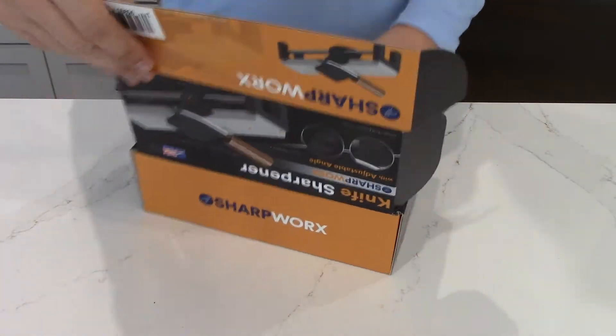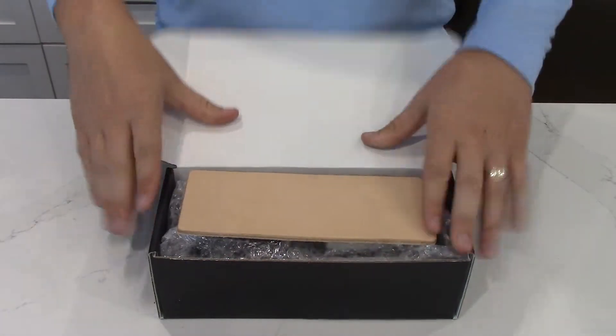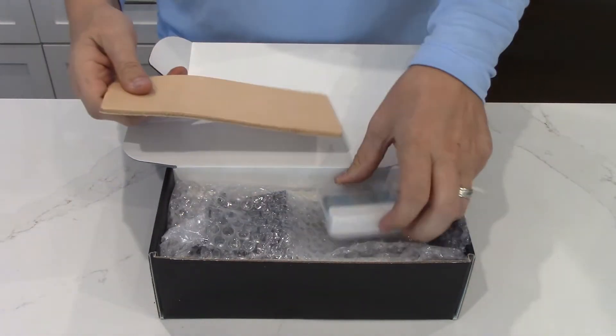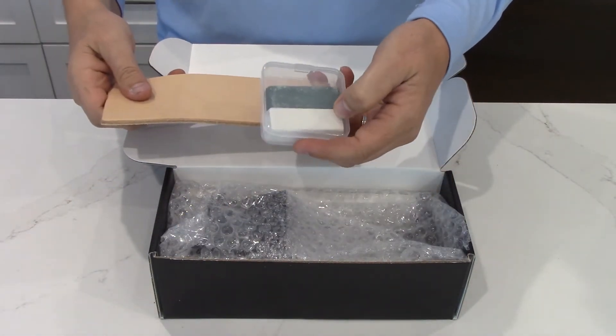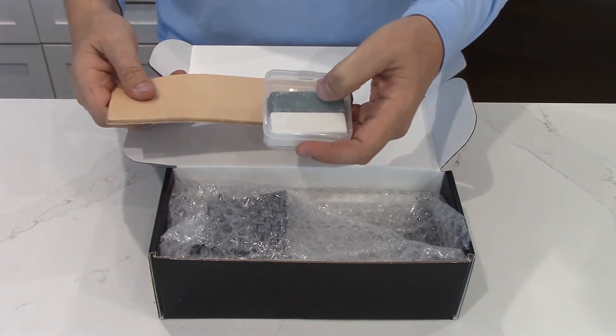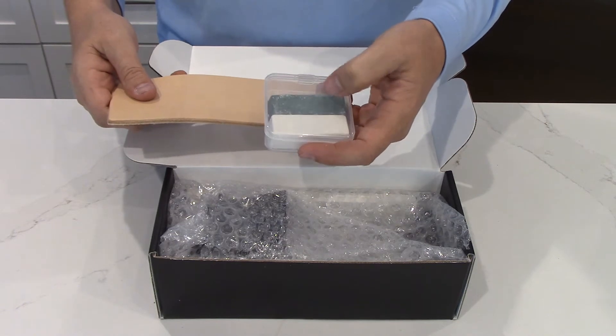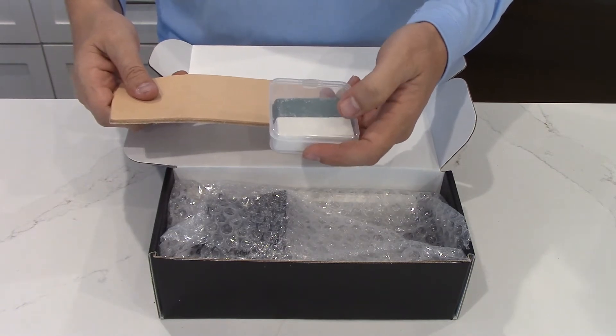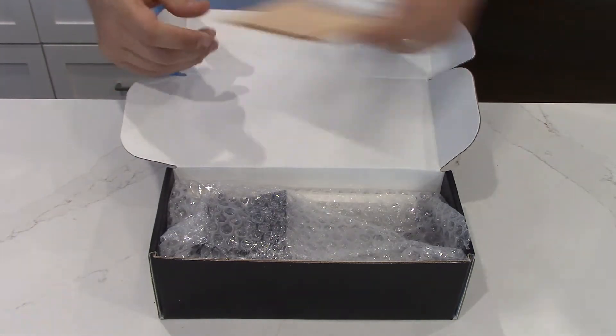So if you open it, the first thing you have is the strop and the compound. It comes with a fine compound and a less light fine compound. They're both super fine, but it comes with two.